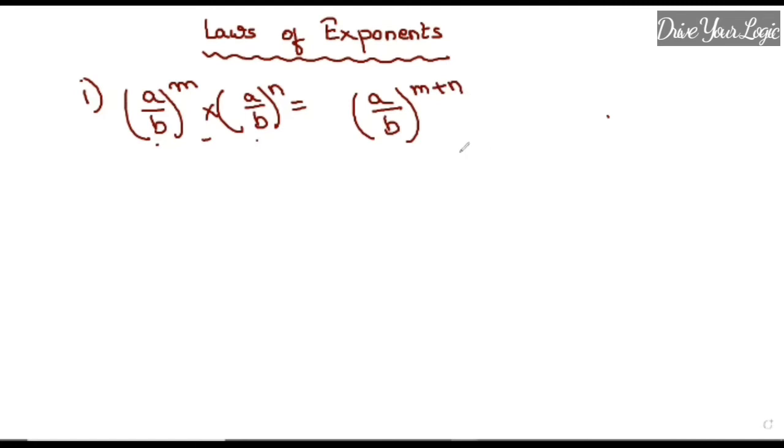And suppose it is division, (a/b)^m ÷ (a/b)^n. That time what we do is we subtract the exponents. Clear?